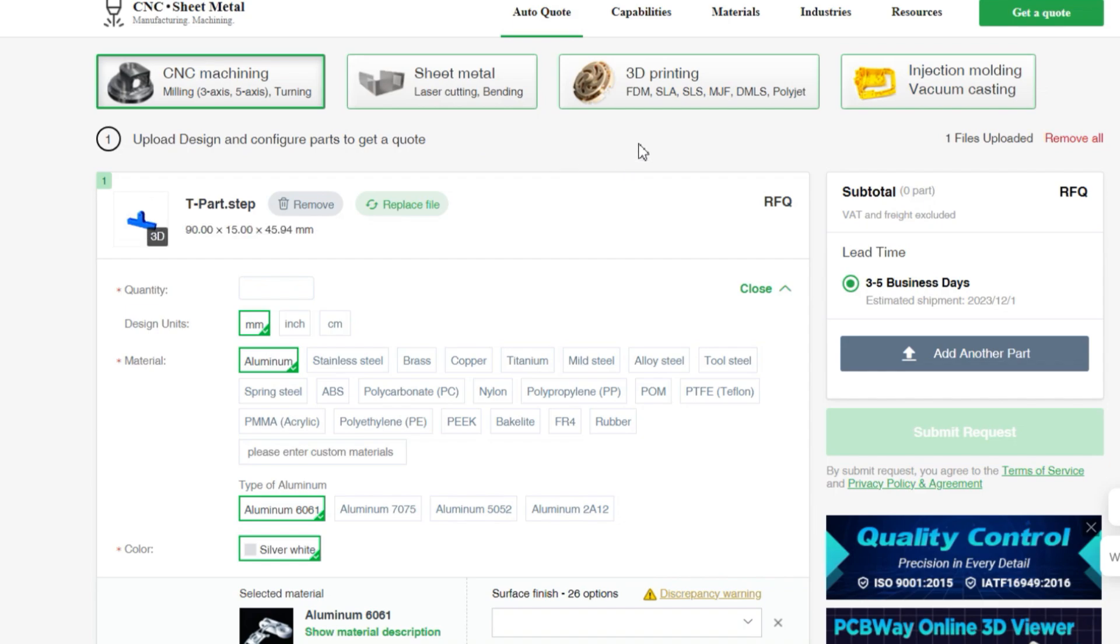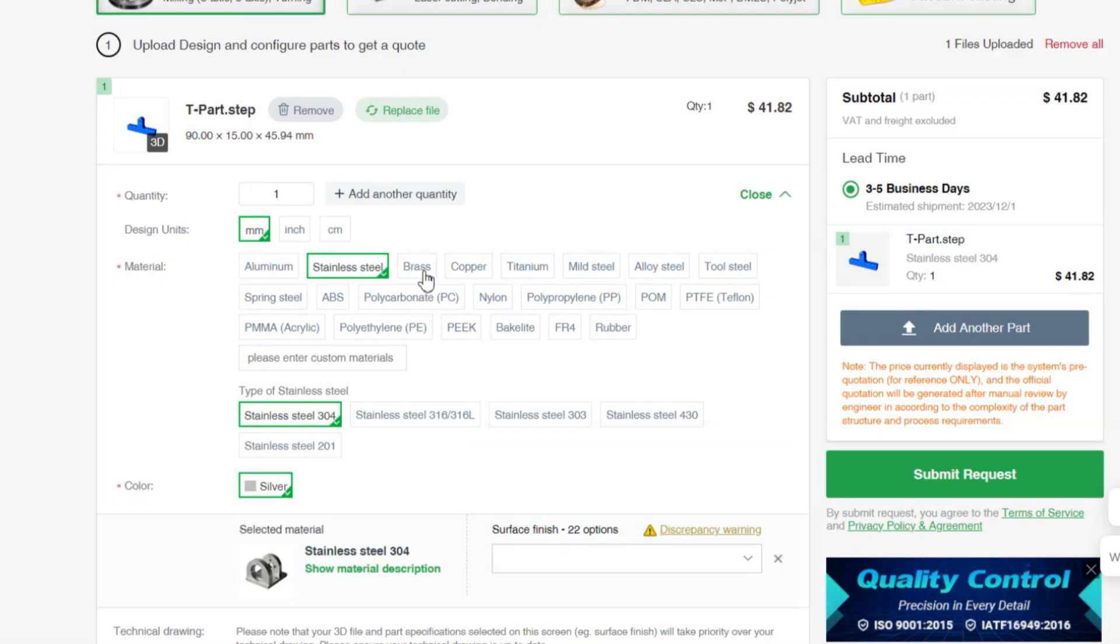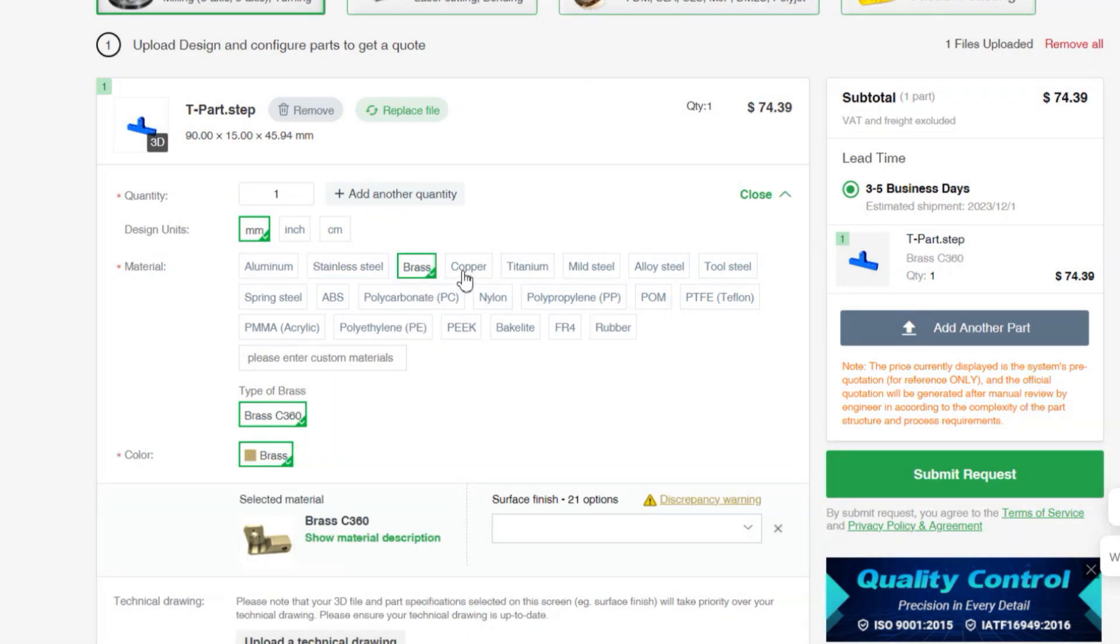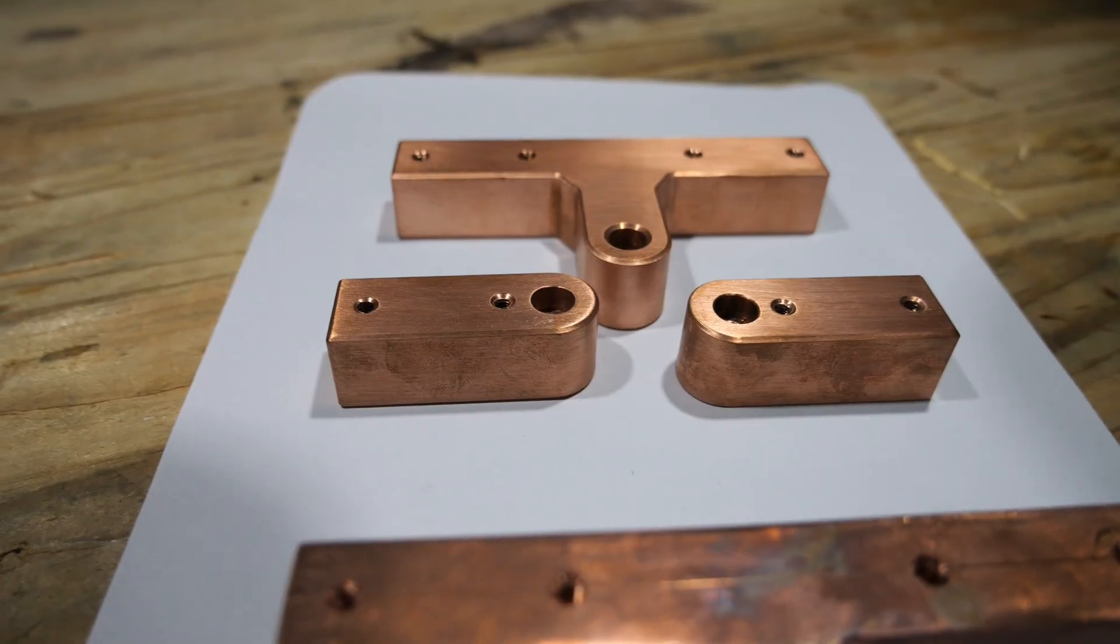All you need to do is upload the file of the desired part on their website, choose from a wide selection of materials like aluminum, stainless steel, brass, copper, titanium and more, and you will receive an immediate estimate of the costs for the final product. I recently put their CNC service to the test and had these parts made from copper.